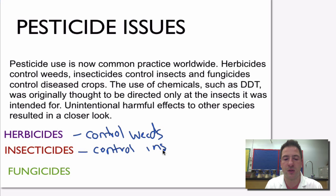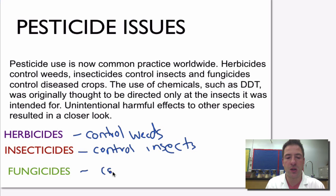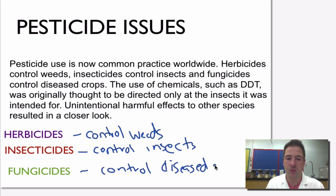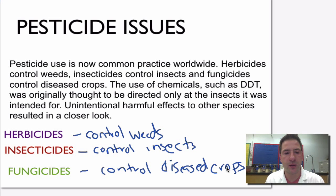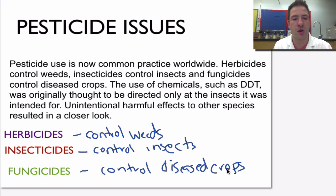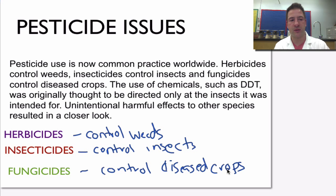Then we have fungicides, which is going to control diseased crops. In Alberta, agriculture is a very important aspect of our economy, and especially in Alberta, Saskatchewan, and Manitoba. We can't have diseased crops — it provides food, provides feed, and it's a source of income for a lot of people in these provinces. So farmers typically use fungicides to make sure that crops don't become diseased.